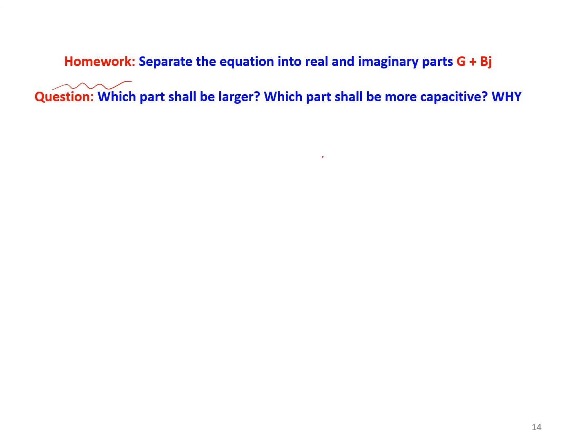It is your homework to separate the admittance equation into real and imaginary parts, and find out which part — conductance G or susceptance B — has the higher magnitude in Y.